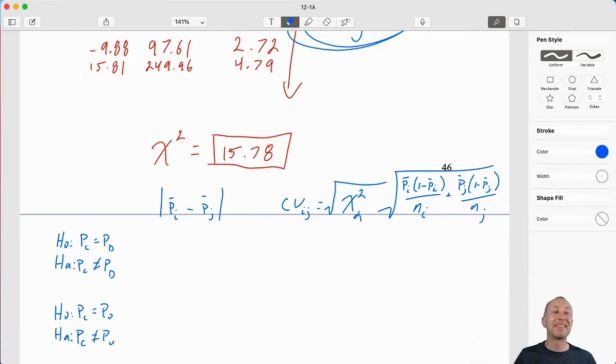That is giving us our critical value for each possible pair. You can see here that that critical value is going to be different for each one because I'm using those different p bar i's and p bar j's. Those change with each test. Let's go through our test statistics first. This is relatively straightforward.